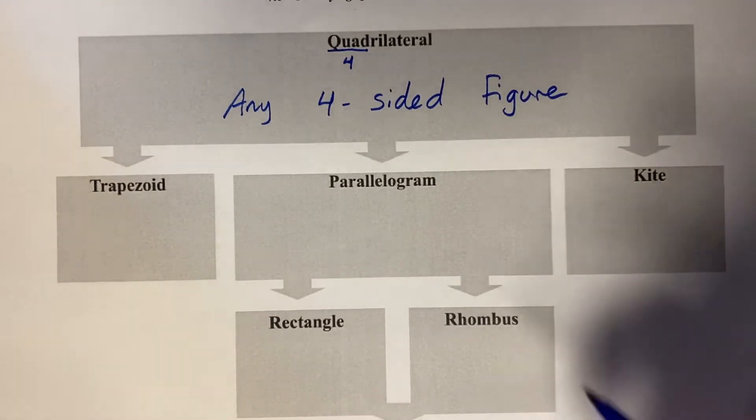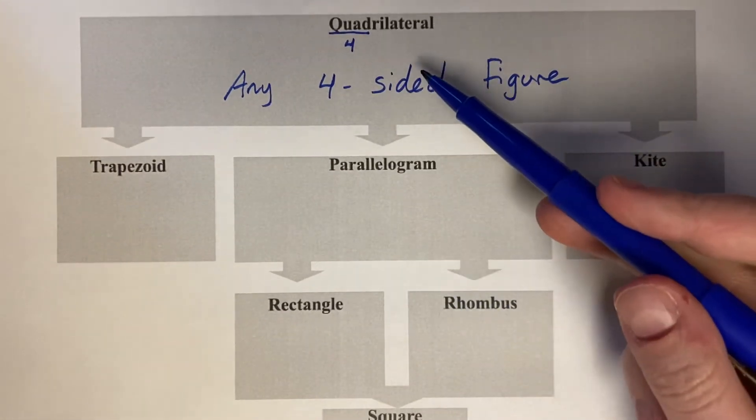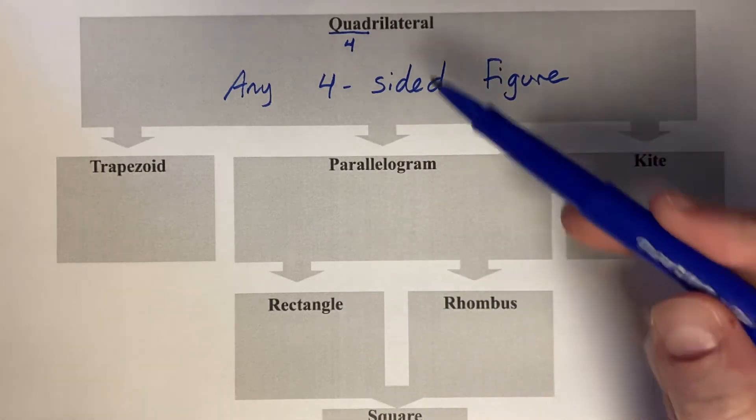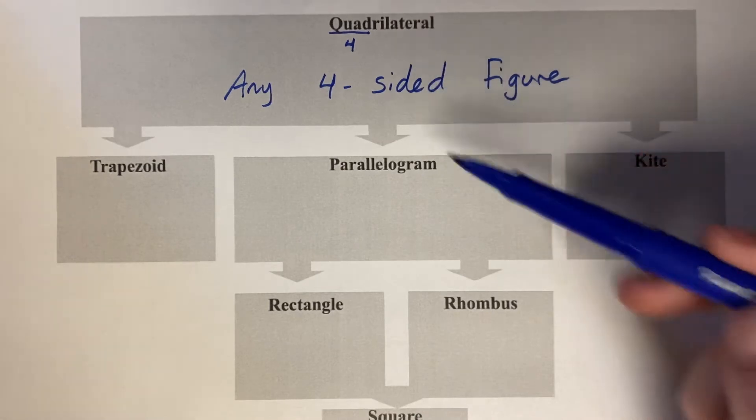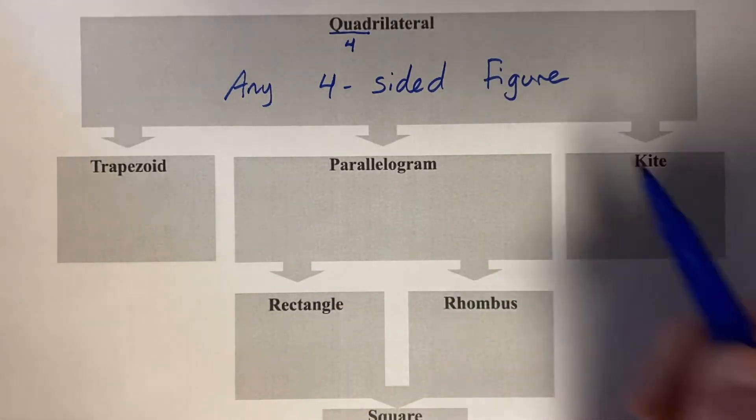Each of these figures underneath are considered quadrilaterals. So a rectangle is a quadrilateral, a rhombus is a quadrilateral, a square is a quadrilateral. All of these fit underneath this heading of quadrilateral.